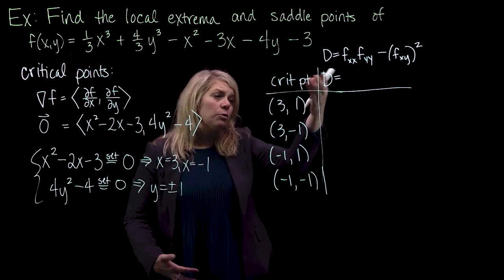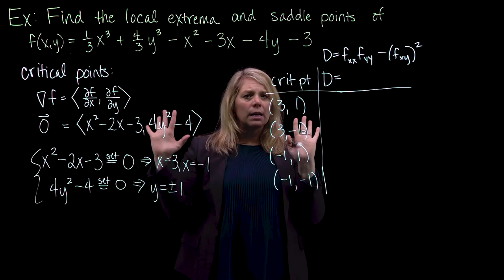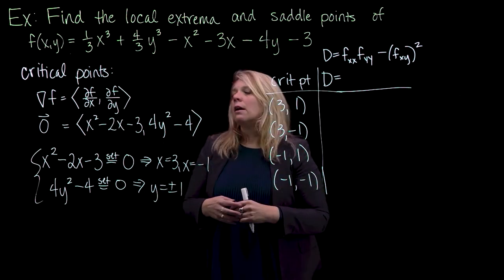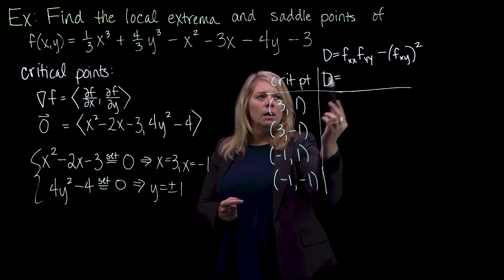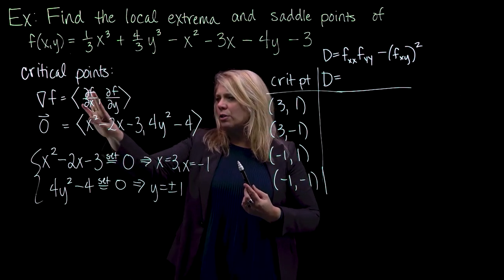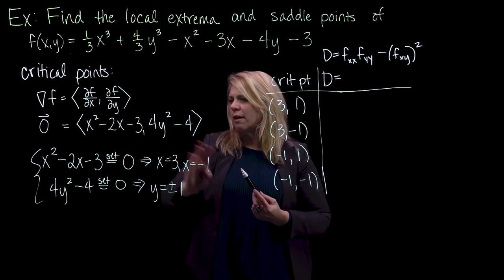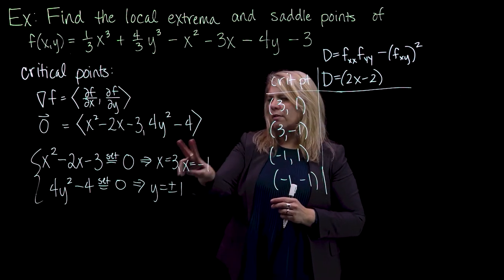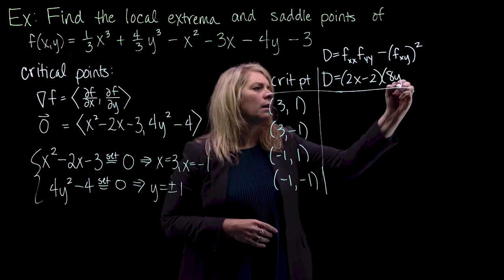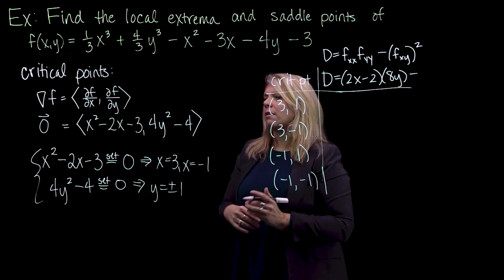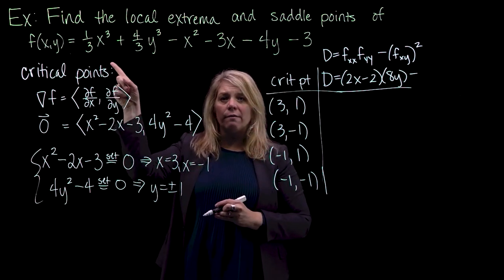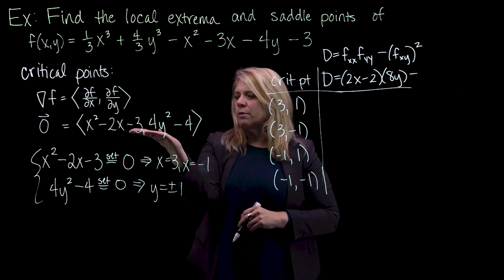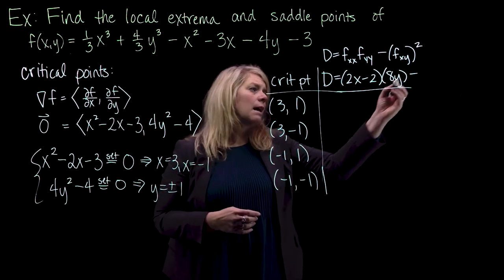This D stands for the discriminant, or perhaps a determinant — it really is a determinant of a matrix. I won't simplify too much because I'm really interested in whether the result is positive, negative, or zero. That will tell us what's going on around those critical points. fxx, using my work from the partial derivatives, is the derivative of fx with respect to x, which gives 2x minus 2. fyy is the derivative of fy with respect to y, giving 8y. For the mixed second derivative fxy, differentiating fx with respect to y gives zero.